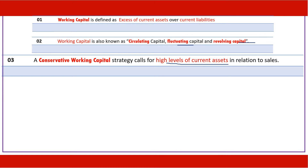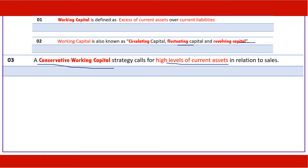A high level of current assets in relation to sales is part of a conservative working capital strategy. The concept of the operating cycle refers to the average time taken between the purchase of raw materials and the final cash realization — the whole process from purchase until the goods are sold and cash is collected.